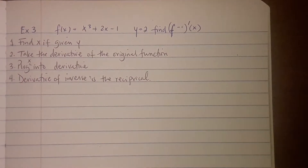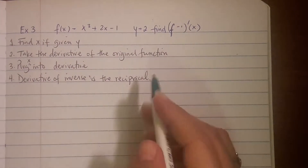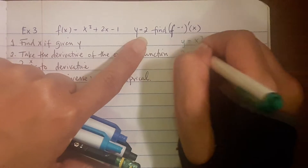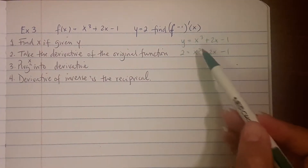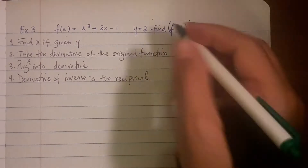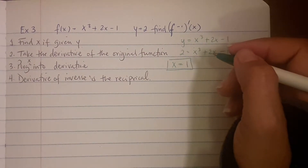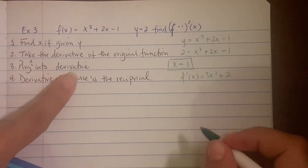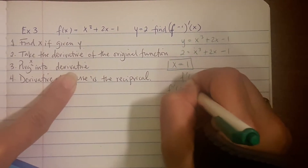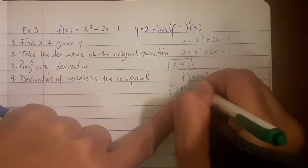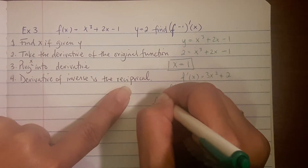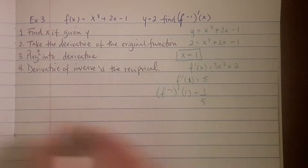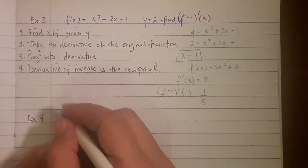Let's apply those steps. We need to find x because we're given y equals 2 in the original function x cubed plus 2x minus 1. Trying x equals 1: 1 cubed is 1, plus 2 is 3, minus 1 is 2 — that's true, so x equals 1. Take the derivative: 3x squared plus 2. Evaluate at x equals 1: 3 times 1 plus 2 equals 5. The derivative of the inverse is the reciprocal: 1 over 5.